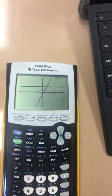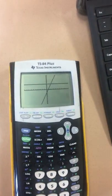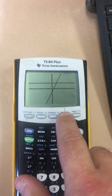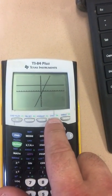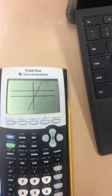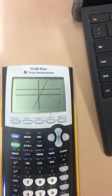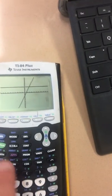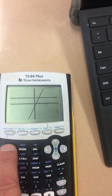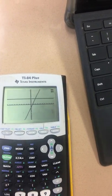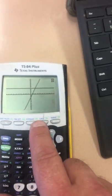So luckily, if you look at the blue above the trace button, it says calc. We have a way to make it show us where it's intersecting. I'm going to hit the second button. Because the word calc is in blue, I'm going to hit the blue button, and then I'm going to hit that.